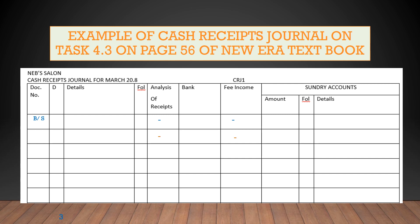The transaction was on the 3rd of March. Who gave us money? Optimum Bankers. Did we handle the cash? No — the money was directly transferred into the bank account. So in our Bank column we write 50,000 Rand. What was this money for? We received 50,000 Rand because of a loan. Do we have a column for loan? No. So we go to Sundry Accounts and write 50,000 Rand, noting that it was a loan from Optimum Bank.